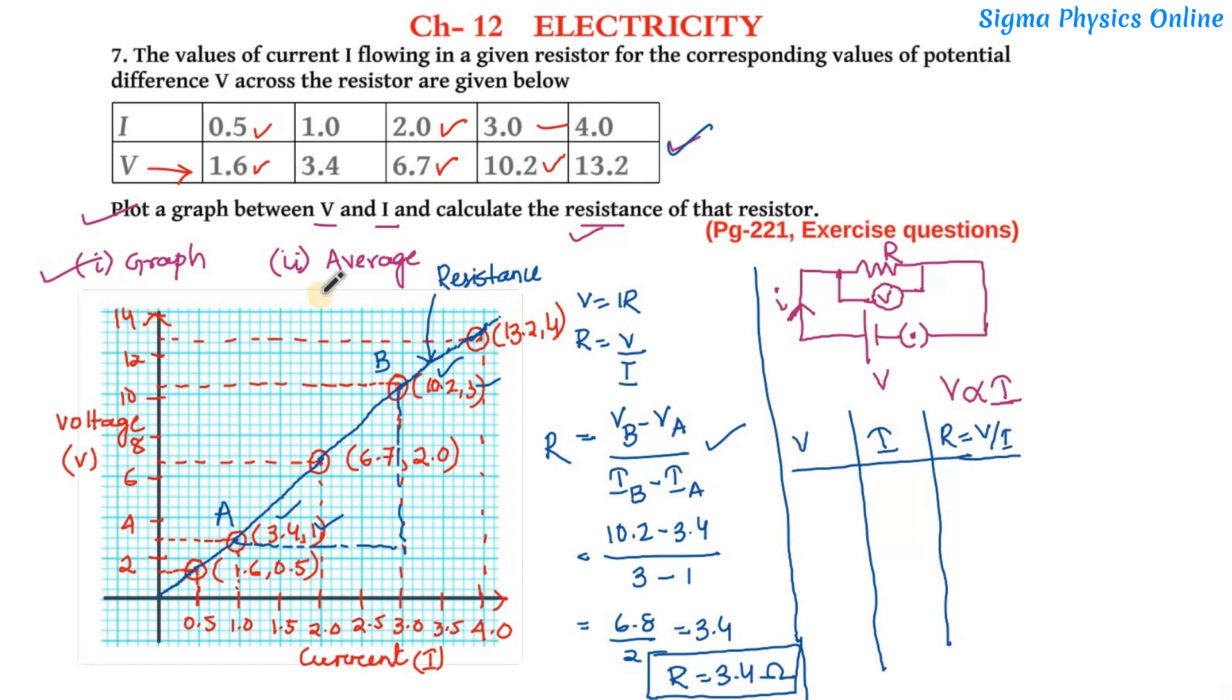So let's write down the values of V and I. So when V is 1.6, current is 0.5. When the voltage is 3.4, the current is 1.0. When the voltage is 6.7, the current is 2.0. When voltage is 10.2, the current is 3.0. And when the voltage is 13.2, the current is 4.0.